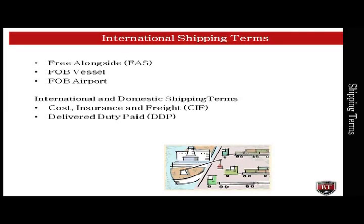If the buyer is involved in sourcing product internationally, there are other terms that can be used. These terms are used because a seller has to transport goods from their location to either a shipping port for ocean shipment or an air freight company for air shipment. Some freight terms that a purchasing professional with non-domestic suppliers should be familiar with are Free Alongside, FAS, FOB Vessel, and FOB Airport. Other terms that may apply to both domestic and non-domestic freight are Cost, Insurance, and Freight, CIF, and Delivered Duty Paid, DDP.